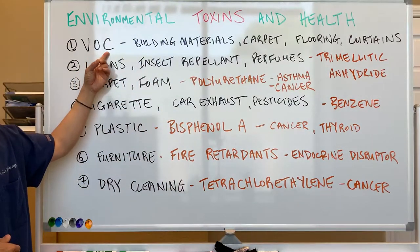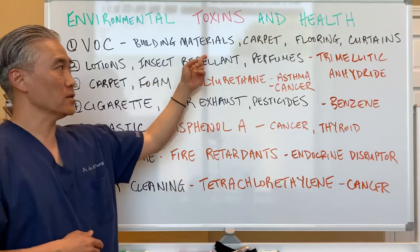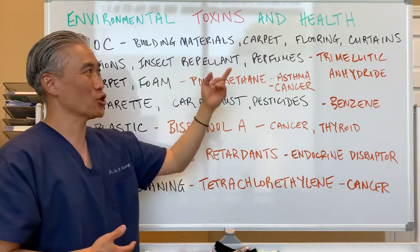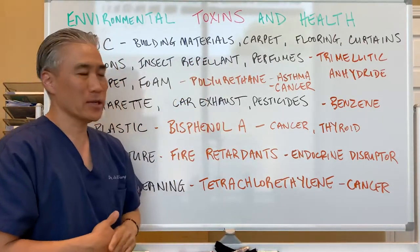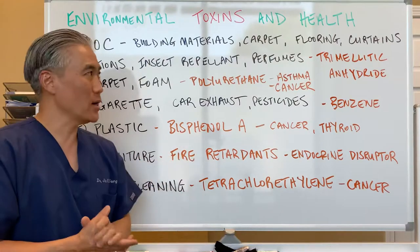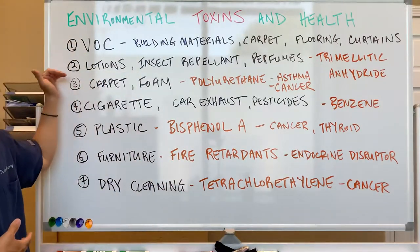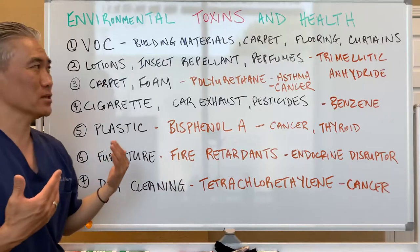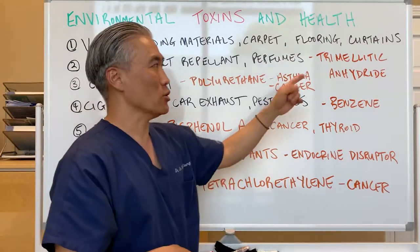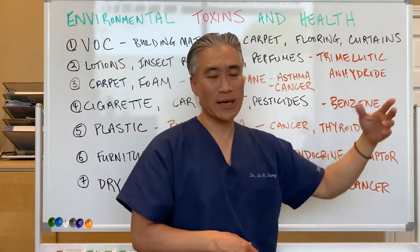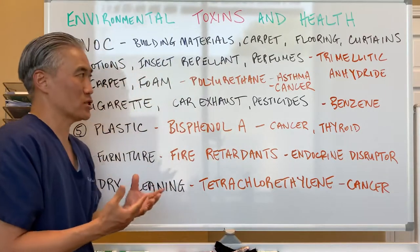Volatile organic compounds, or VOCs, are found in a lot of building materials, insulation, carpeting, flooring, and certain types of thick curtains. Number two is lotions, insect repellents, and perfumes — that's something called trimelitic anhydrides, and these can be endocrine disruptors.